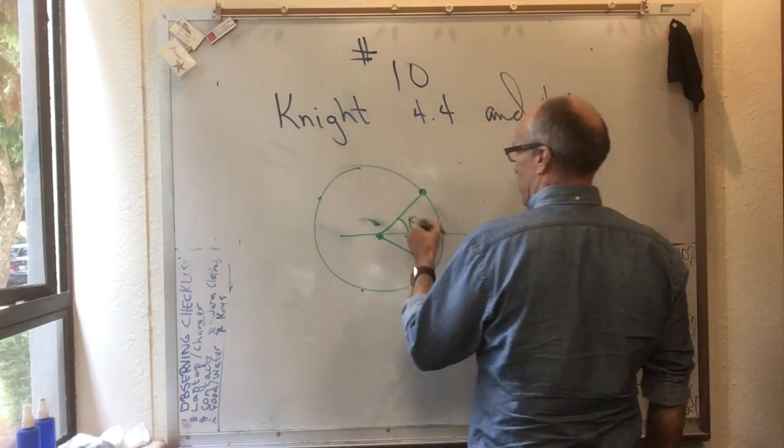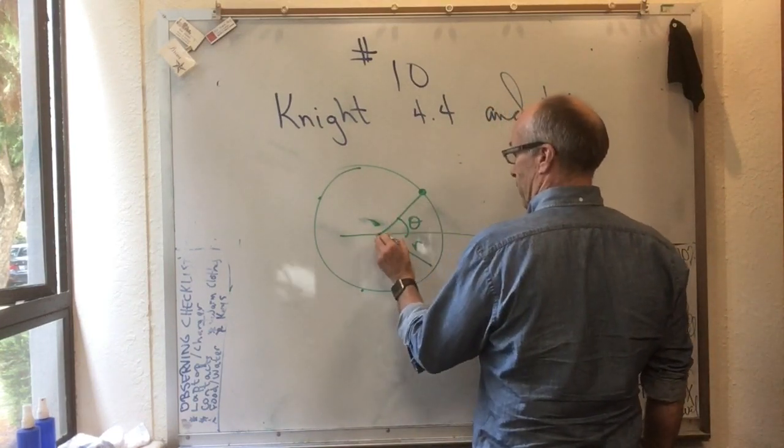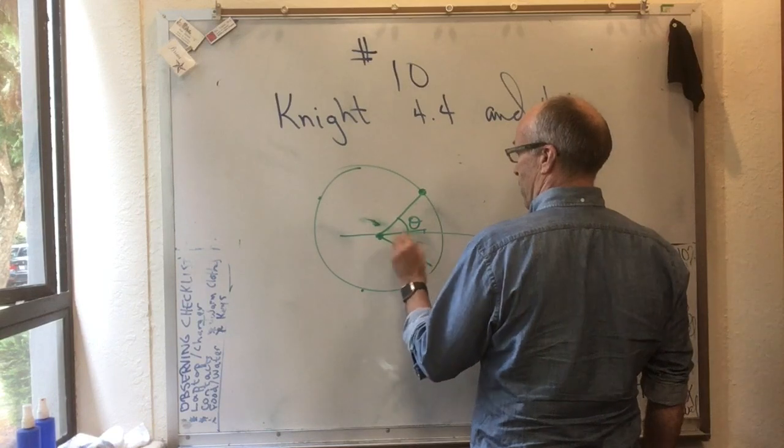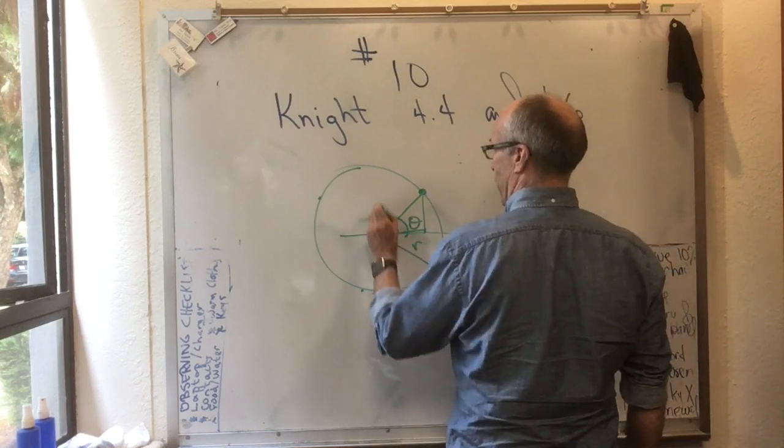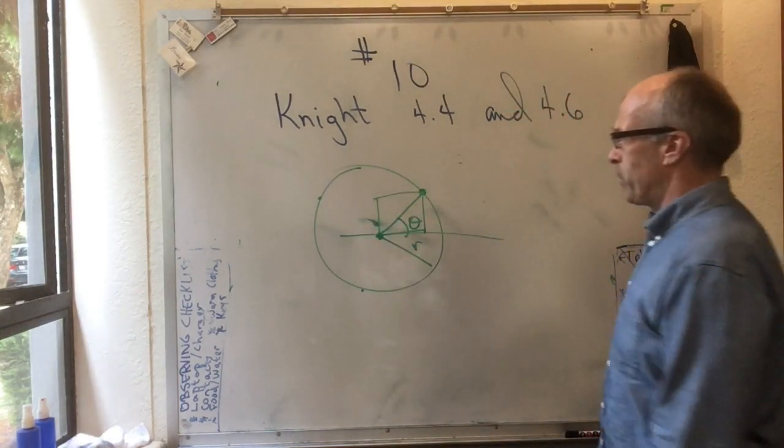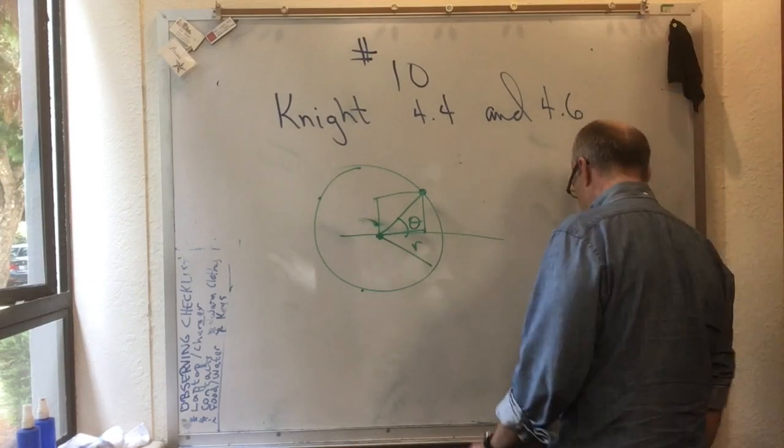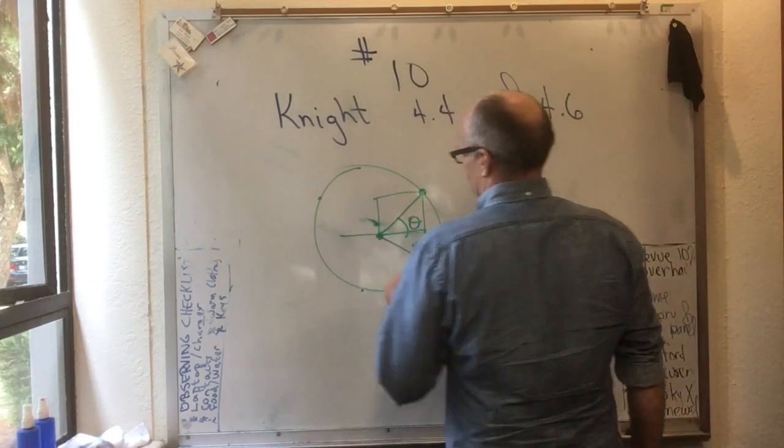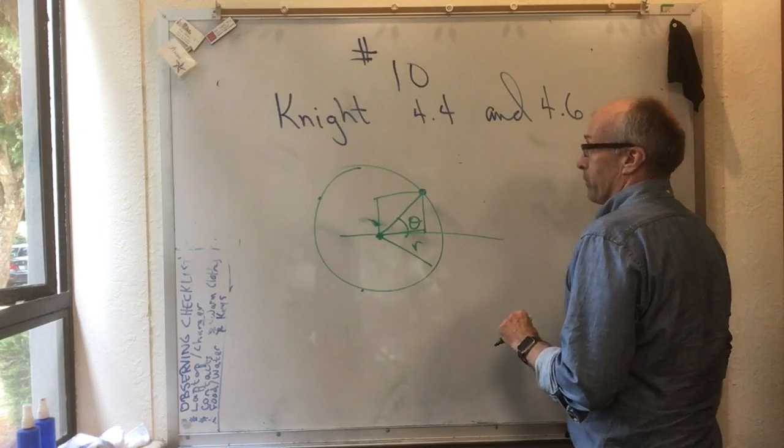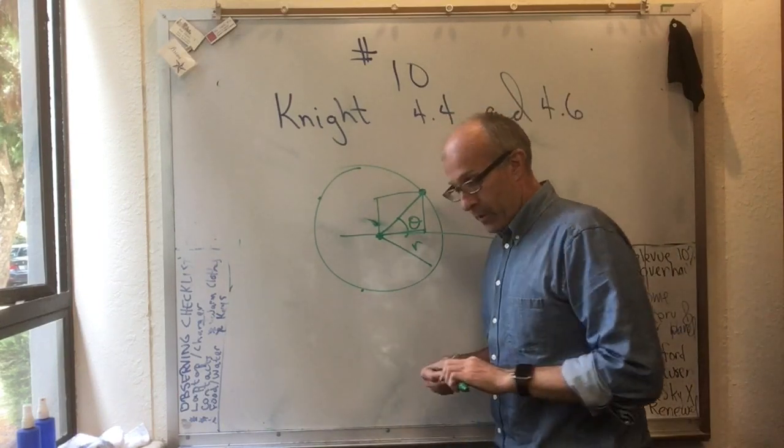And if you specify that angle, you know how far this way it is, that would be r cos theta, and you know how far that way it is, that would be r sine theta. So you know everything about this particle if you know its theta value.